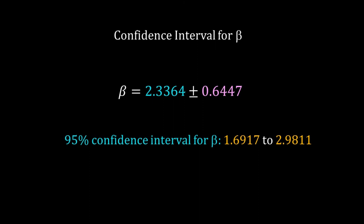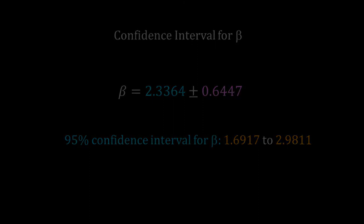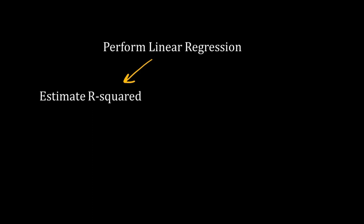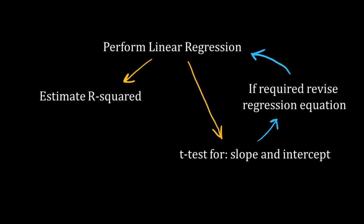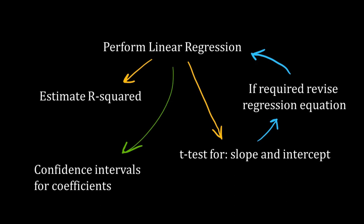So we are done with the statistics of our regression line. We have calculated the confidence interval and performed the t-test. Here is what we have learned: our work does not stop simply by doing a linear regression. Once done, check the quality of fit by estimating R-squared. Also perform the t-test for both coefficients — the slope and the intercept. The t-test may show that one coefficient, like the intercept, is not significant. Remove that coefficient from the regression equation, perform the regression again, and redo all the analysis. Also calculate the confidence interval for the coefficients. Now you can report your regression with all the statistics — statistics with confidence. That's all for this video, thank you for learning with me.